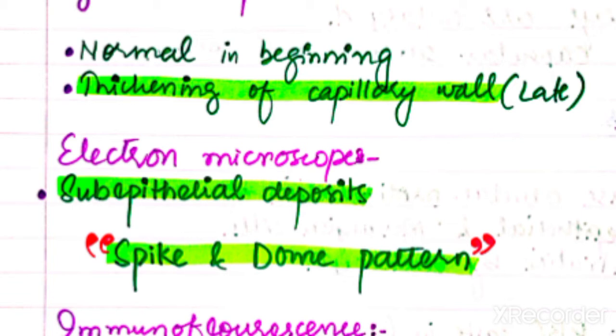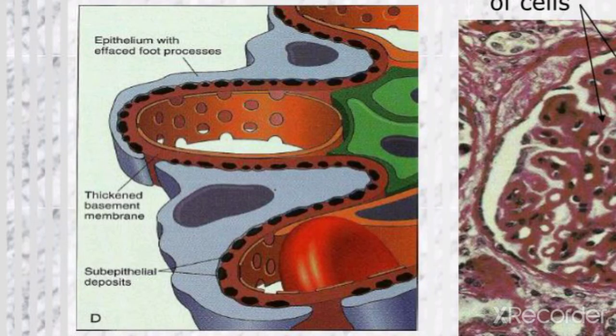The most characteristic MCQ finding is the spike and dome pattern. A dome is formed and a spike is formed between the deposits. In light microscopy you see the thickening; in electron microscopy you see the spike and dome pattern.